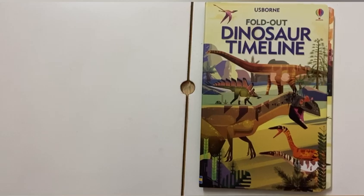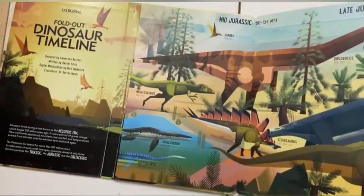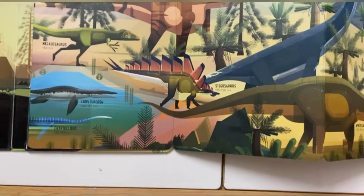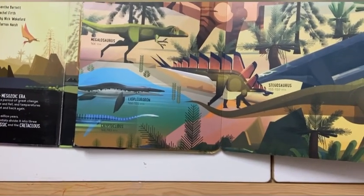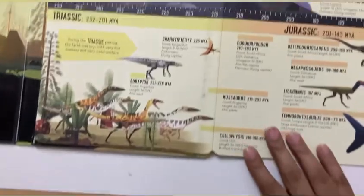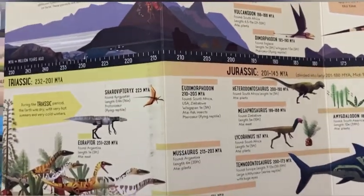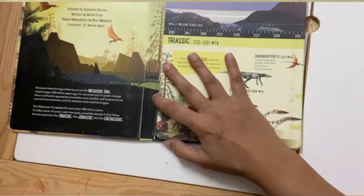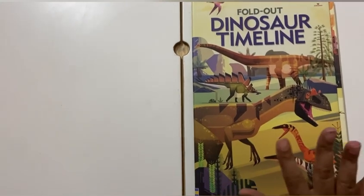Here's another book I've shared on my page — also really budget friendly, and the whole thing opens up. This one is specifically for dinosaurs, so it's great if you have a dinosaur lover. Shora has always found dinosaurs extremely fascinating and wanted to know which dinosaurs existed in the Jurassic, Triassic, and Cretaceous periods. It has some information on the flip side — where they were found, their size, whether they were herbivores, carnivores, or omnivores — but it's not information-heavy. Visually, though, it's absolutely fantastic for its price.